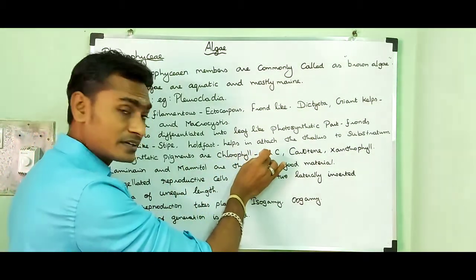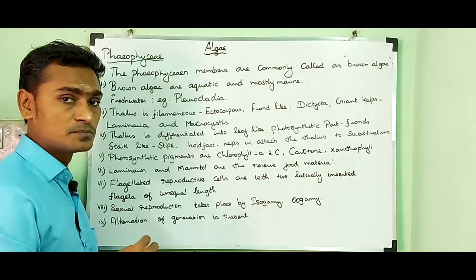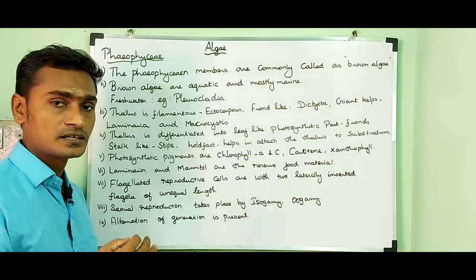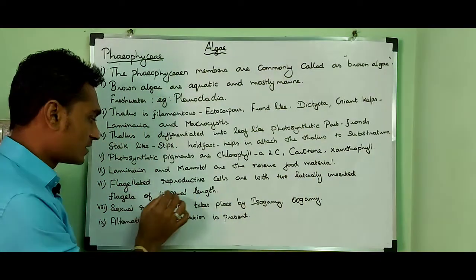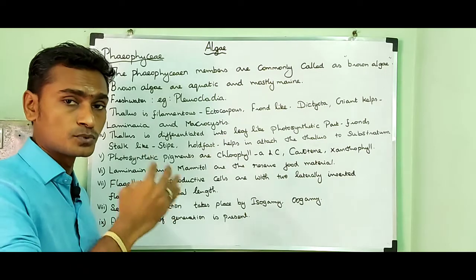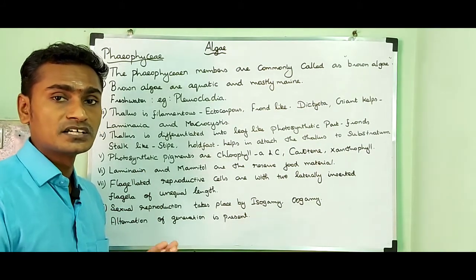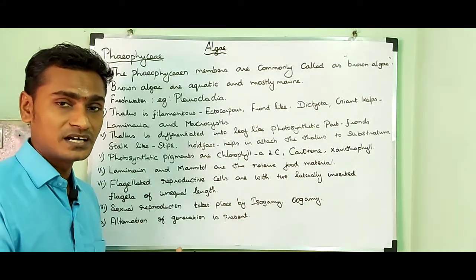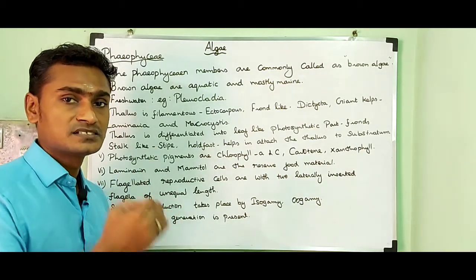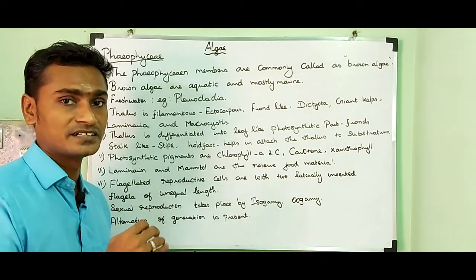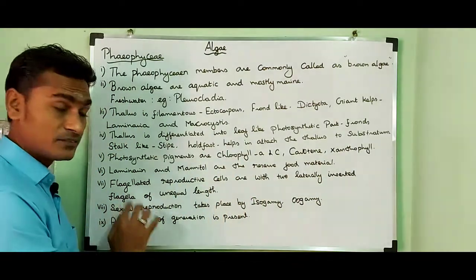Photosynthetic pigments are chlorophyll A, C, carotene and xanthophyll. Laminarin and mannitol are the reserve food materials. Flagellated reproductive cells bear two laterally inserted flagella of unequal length — one is called whiplash (smooth, without projections) and the other is called tinsel (with hair-like projections, rough in structure).